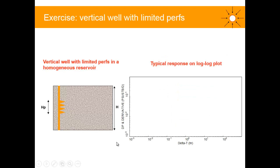Let's look at a quick example with a vertical well with limited perforation of height HP and net reservoir thickness H. The limited perforation is more or less in the center of the reservoir. We consider the ideal case with a homogeneous reservoir — uniform permeability throughout — and we'll figure out the typical response on the log-log or derivative plot.